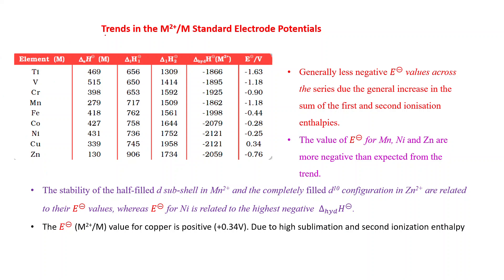First, let's look at the trends in M2+/M standard electrode potential. As we already discussed, the standard electrode potential depends on three parameters: enthalpy of sublimation, ionization enthalpy, and hydration enthalpy.